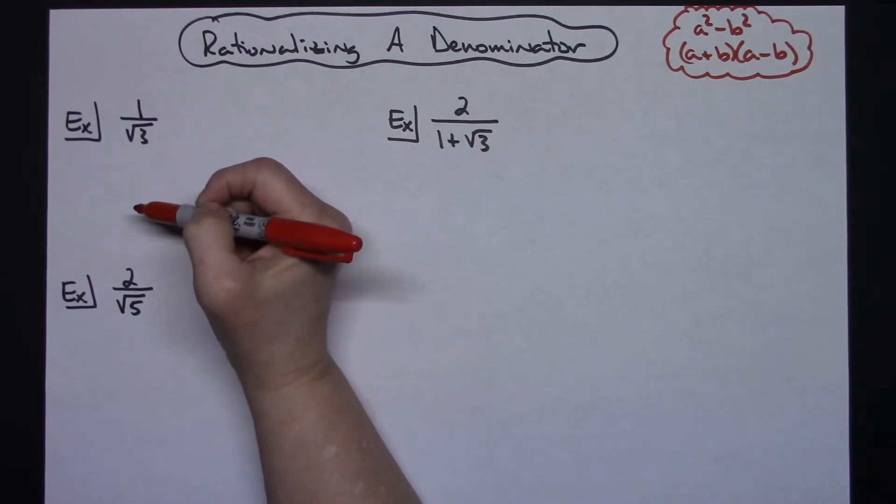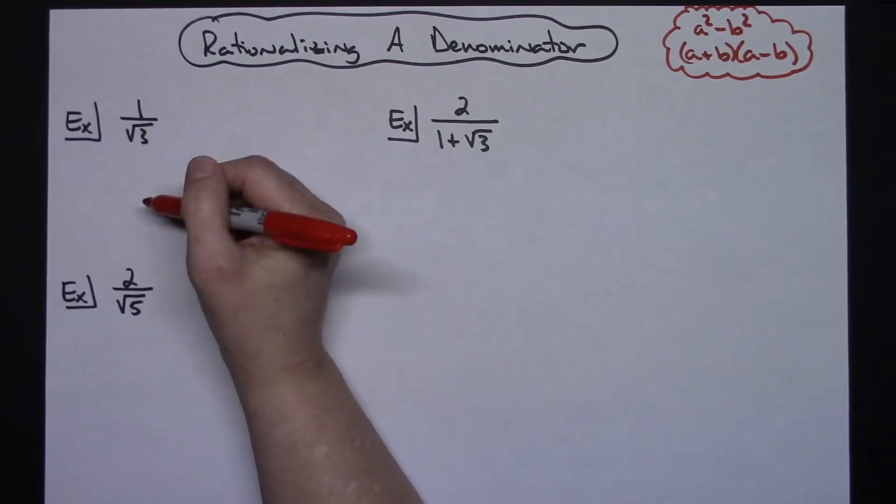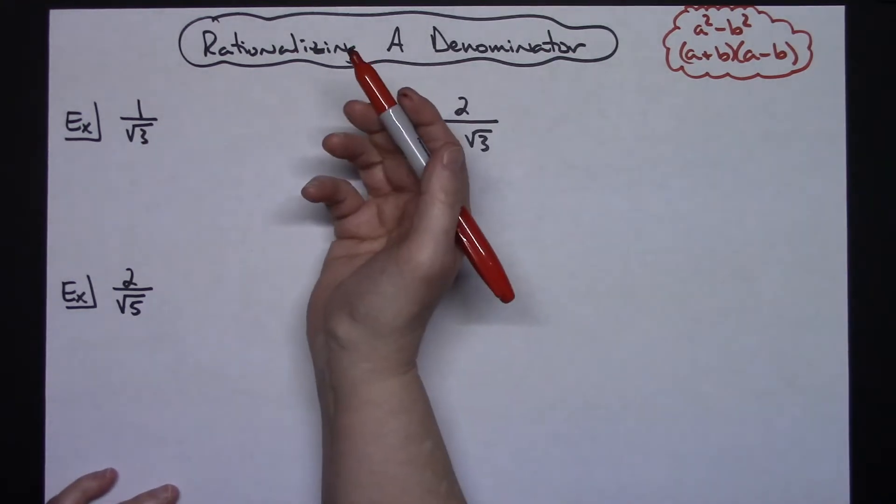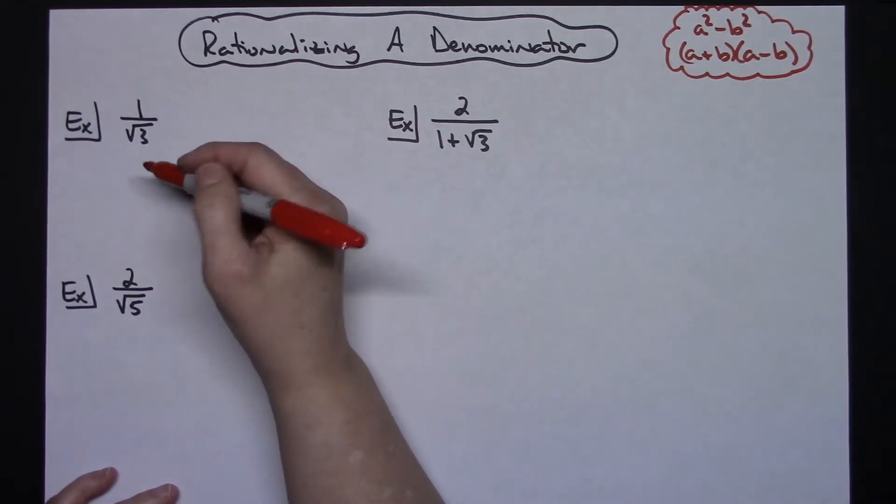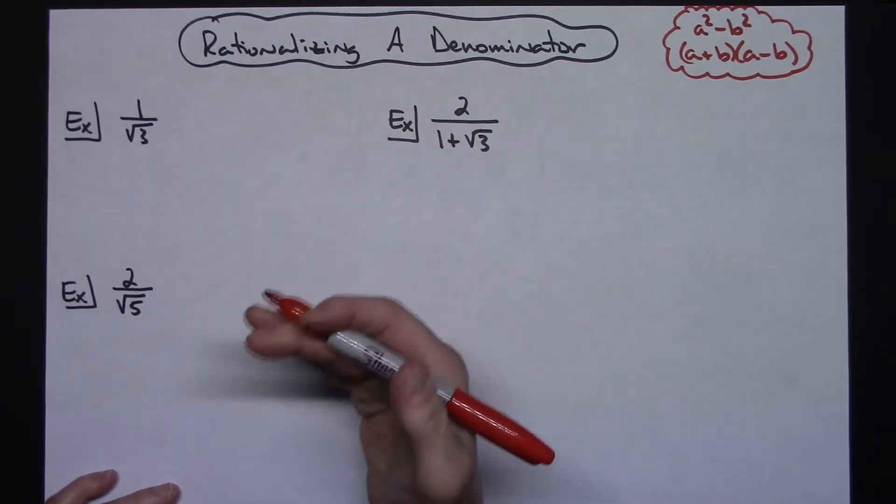So let's suppose I've got 1 over square root of 3. In most high schools in the United States, we generally have the students rationalize this denominator. We don't let them leave that square root of 3 in the denominator. So we multiply through by a form of 1. We choose whatever the denominator is to make our form of 1.